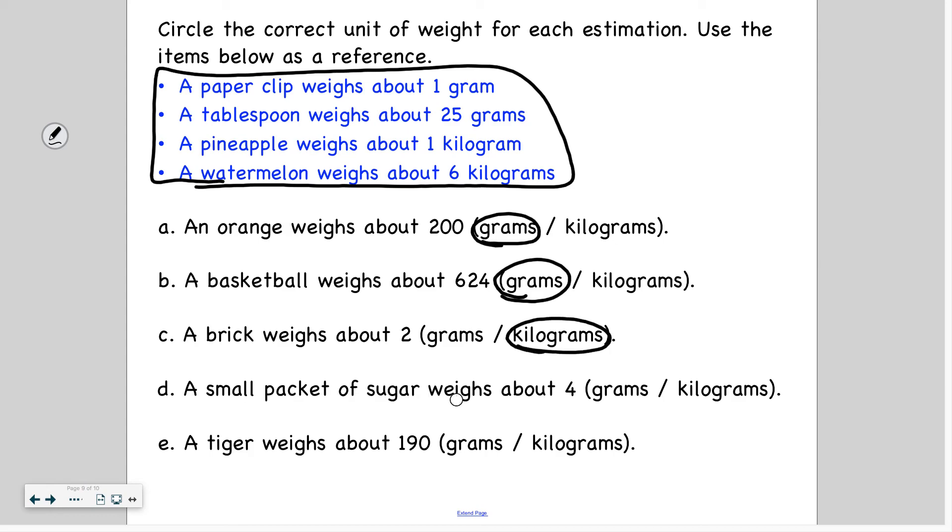A small packet of sugar weighs about 4 grams or 4 kilograms. Well, grams seems about right because a small packet of sugar doesn't weigh much more than a paperclip. So I'm going to go with grams for that one.